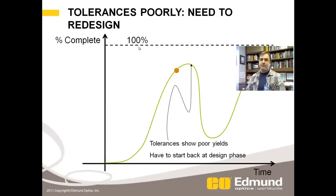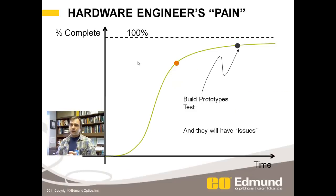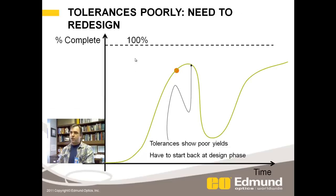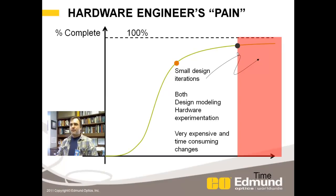Sometimes after you tolerance the design, you find that it doesn't yield well — you don't get good MTF or good wavefront, whatever your top-level requirement is — and you've got to start back at your initial design. Then, when you're done with a critical design review, you go build prototypes. You might think you're done at that point, but inevitably building prototypes highlights shortcomings in your design. Once you get the prototypes built, begins the extremely painful process of small iterations — done with design modeling and sometimes hardware experimentation. At this point you may have released drawings, so you've got to worry about updating drawing revisions and informing customers, making these changes very expensive and time consuming.